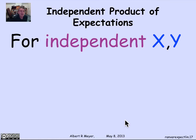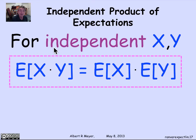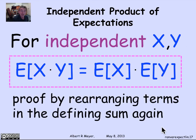That's the lovely rule about linearity of expectation, which holds regardless of independence. There is also a rule for products, but it requires independence. The independent product rule says that the expectation of a product of two random variables x and y equals the product of their expectations, providing they are independent. This extends to many variables if they're mutually independent. The proof is again by rearranging terms in the defining sum for the expectation of xy.